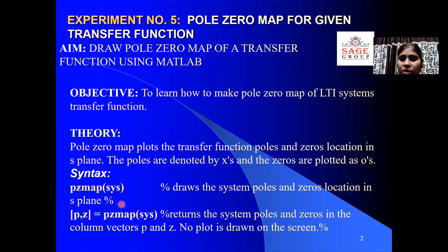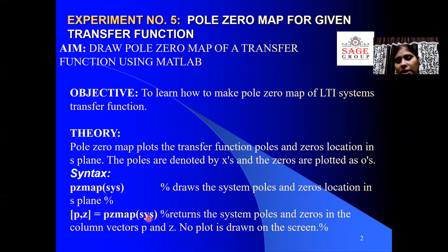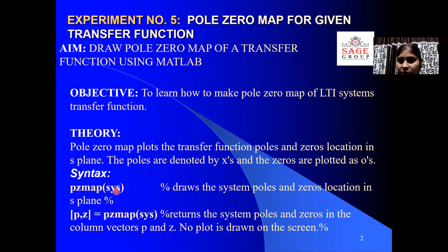If we want to calculate the location of a given transfer function, the syntax is: [P, Z] = PZmap(SYS), where SYS is the variable of the transfer function. Instead of SYS, you can write any variable name such as X, Y, Z, A, B, C, or D. This command returns the system poles and zeros in column vectors, but the plot will not be displayed on screen. The plot is available using the PZmap command.